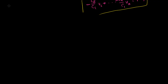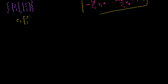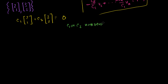So let's say I have the set of vectors: [2, 1] and [3, 2]. My question is: are these linearly independent or linearly dependent? Well, in order for them to be linearly dependent, that means there's some constant c1 times [2, 1] plus some other constant c2 times [3, 2] that equals the zero vector, where c1 and c2 aren't necessarily both zero. If either is non-zero, we have a linearly dependent set.